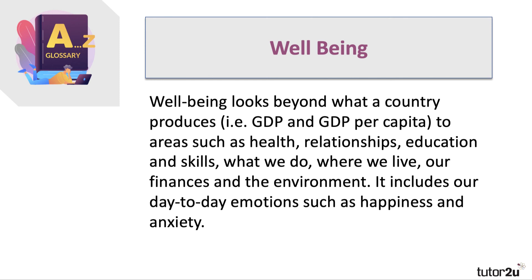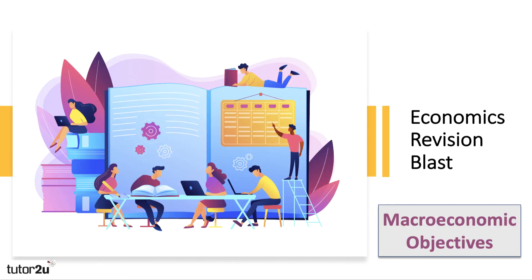Finally, well-being. We have a separate video on well-being, so I won't say too much, but it is increasingly becoming an important objective of macro policy. It is essentially measured using surveys as well as a range of other data. Well-being looks beyond what a country produces — beyond GDP and GDP per capita — and tries to encompass areas such as health, relationships, education, skills, where we live, the environment, and day-to-day emotions such as happiness and anxiety. Well-being is increasingly regarded as an important macroeconomic as well as social indicator. This has been a video covering a wide range of macroeconomic objectives — be aware of what they are, have a feel for the data, and you can always return to these objectives for a macro essay question.